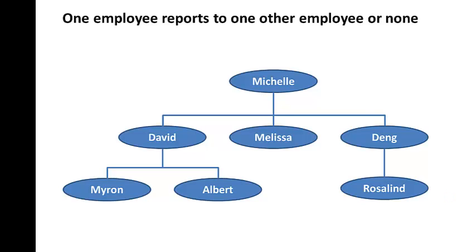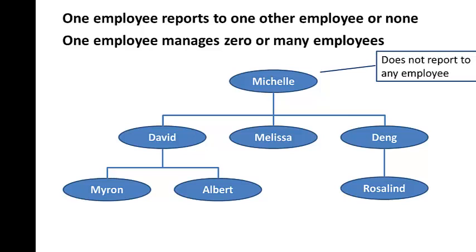And one employee reports to one other employee or none. And therefore, you see Michelle doesn't report to any employee. And one employee manages zero or many employees. And those in the bottom have no subordinates. In other words, Myron, Albert, Melissa and Rosalind have no subordinates. So how do you represent this scenario?